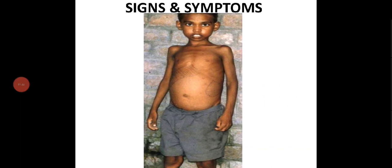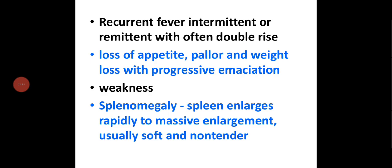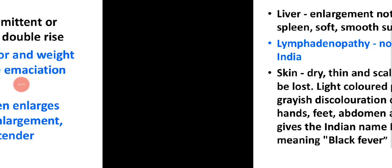Signs and symptoms include recurrent fever — intermittent or remittent — with often a double rise, meaning it rises twice a day. There is also loss of appetite, pallor with bluish discoloration of the skin, weight loss with progressive emaciation, weakness, and splenomegaly — enlargement of the spleen, usually soft and non-tender.